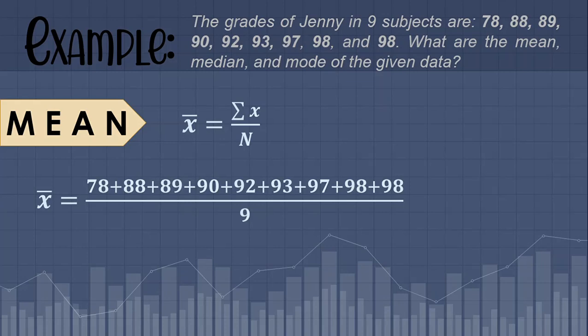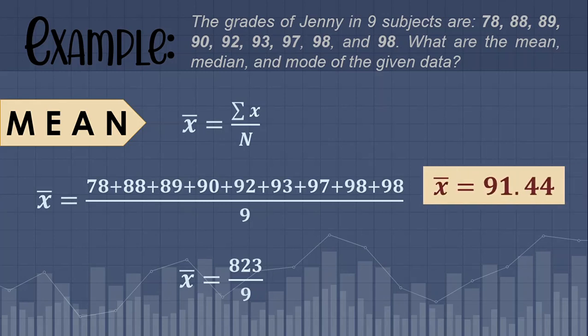all over n, which is equal to 9, since we have nine subjects or nine values. The summation of x is equal to 823, divided by 9, so x-bar or the mean is equal to 91.44. That is how you compute the mean.